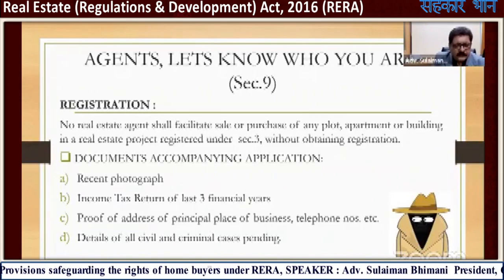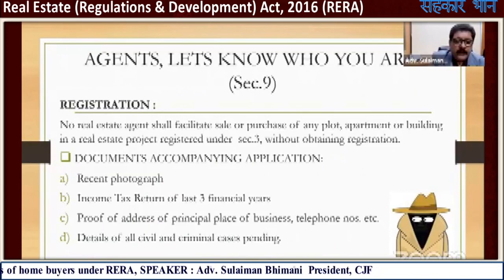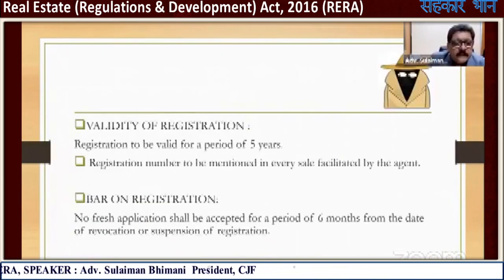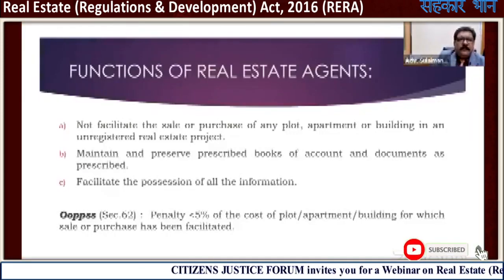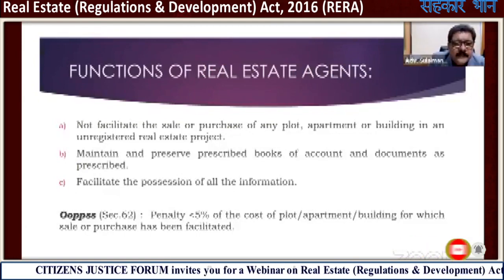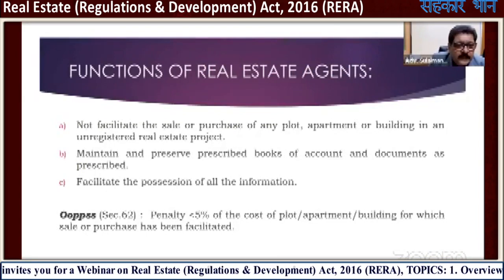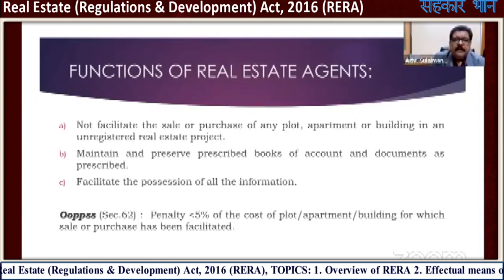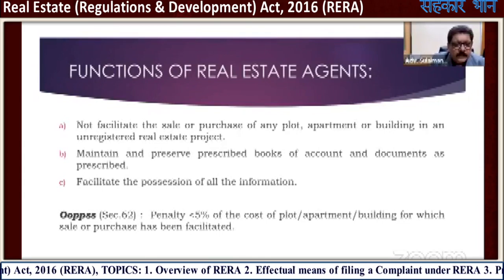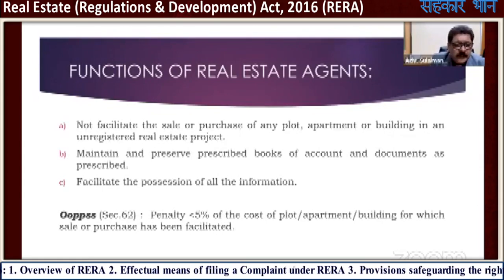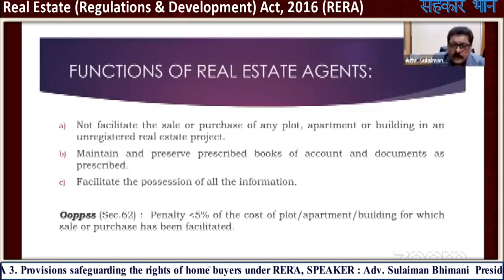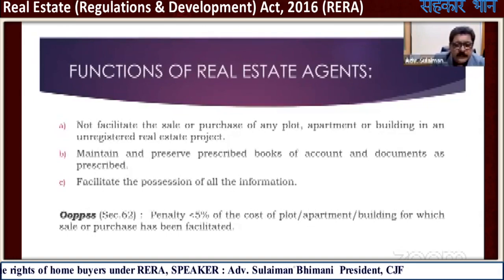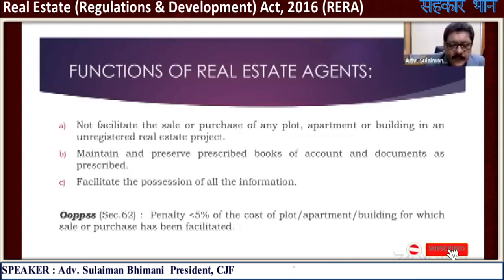The registration is valid for a period of five years. No fresh application shall be accepted for a period of six months from the date of revocation or suspension of the registration. Functions of real estate agents: they cannot facilitate the sale or purchase of any plot, apartment, or building in an unregistered real estate project. They must maintain and preserve prescribed books of account and documents. Under Section 62, penalty is up to 5% of the cost of the plot, apartment, or building for which the sale or purchase was facilitated. So neither the builder nor the agent can cheat the home buyer.